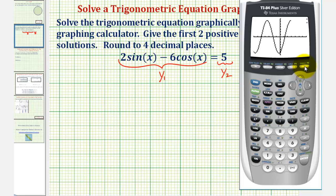There's a graph of y one. And there's a graph of y two. The first two positive solutions would be the x coordinate of this point of intersection.